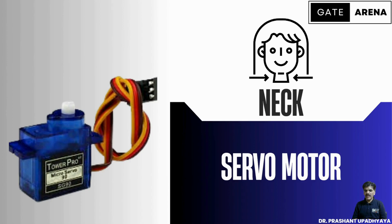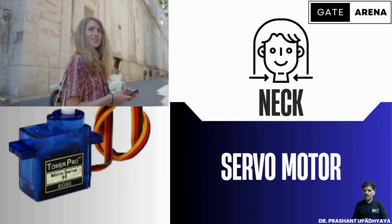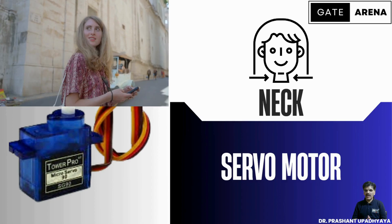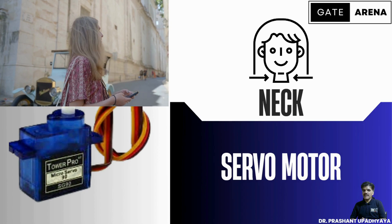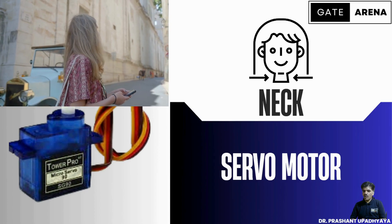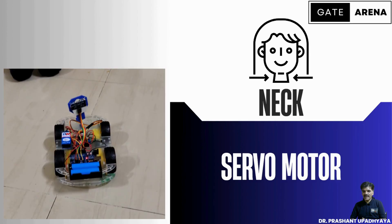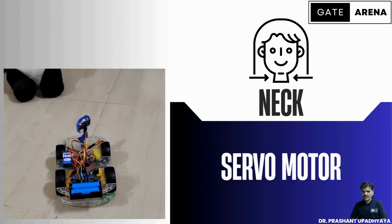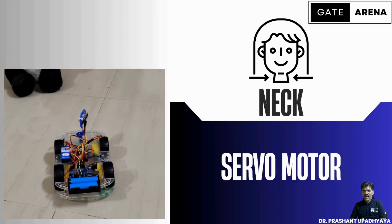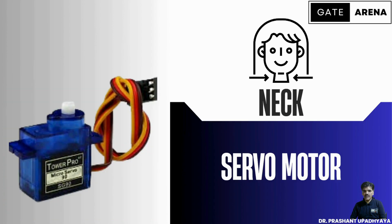The third component we are using is the servo motor, which acts like the neck of our robot. As a human uses their neck to turn their head and check for vehicles coming from the left or right, our robot uses the servo motor to do the same. The servo motor turns the ultrasonic sensor left and right to scan its surroundings. If it sees an obstacle in front, it decides to change its path to avoid a collision.